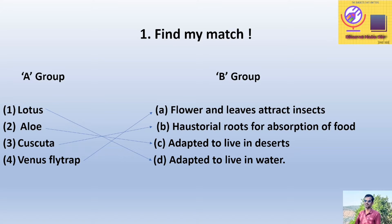Question 1: Find My Match. In group A: lotus, aloe, cuscuta, and Venus flytrap. In group B: flowers and leaves attract insects, haustorial roots for absorption of food, adapted to live in deserts, adapted to live in water. Matches: lotus - adapted to live in water; aloe - adapted to live in deserts; cuscuta - haustorial roots for absorption of food; Venus flytrap - flowers and leaves attract insects.